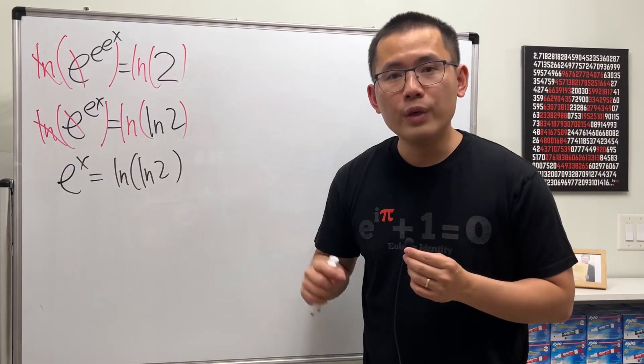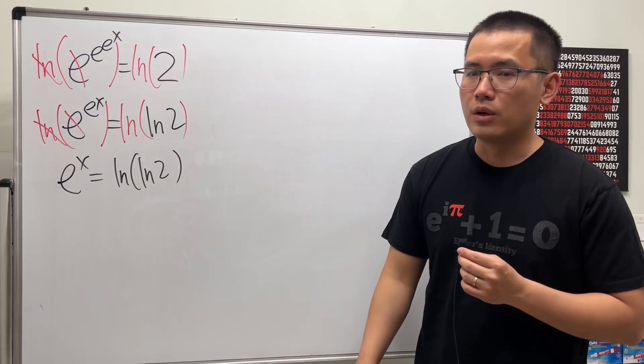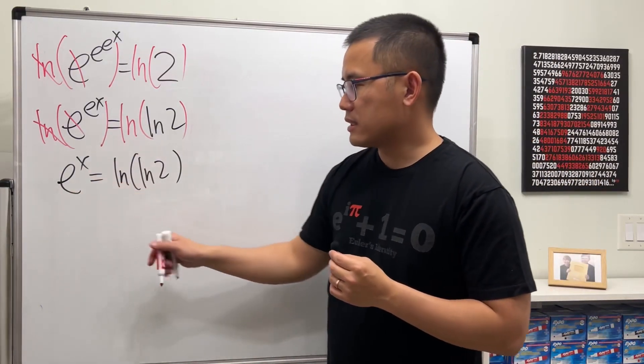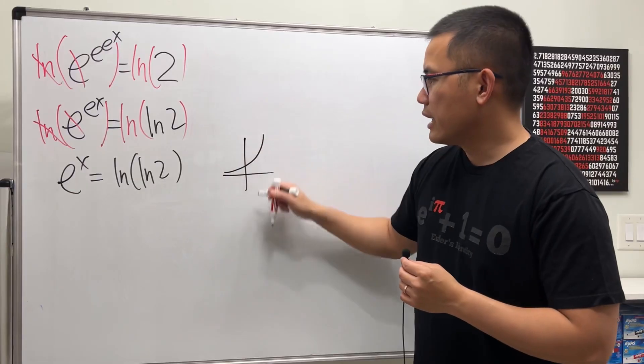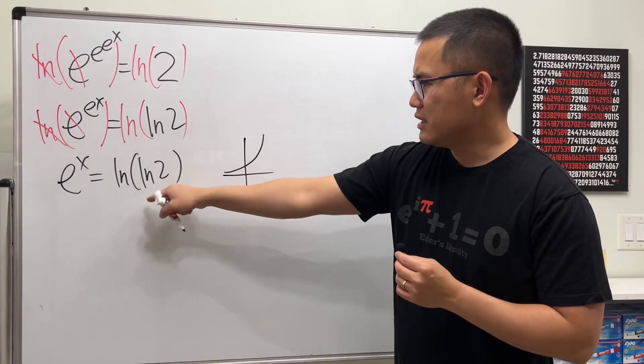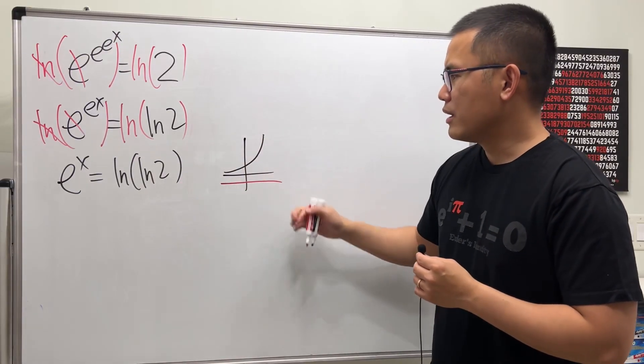So, in order for us to continue, we actually have to go to the complex world. Because e^x, here is the graph. It's like this. And this is a negative number, so it's somewhere down here. They do not intercept.